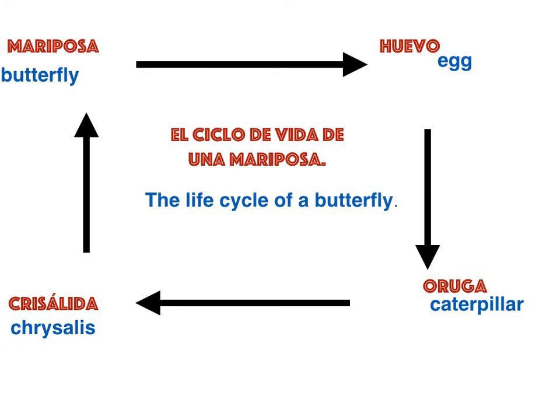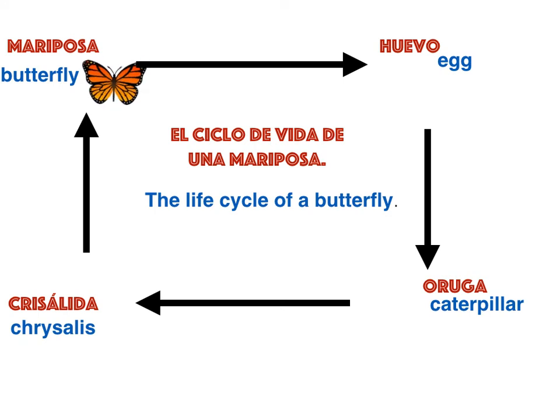First comes the mariposa. The mariposa lays a huevo on a leaf — lays an egg on a leaf. Huevo.